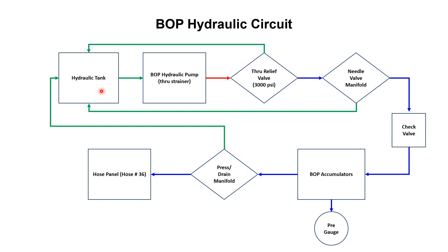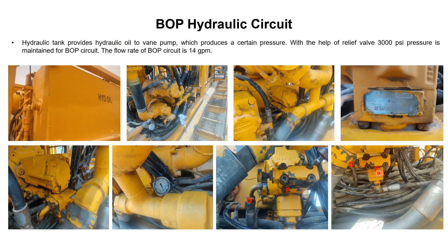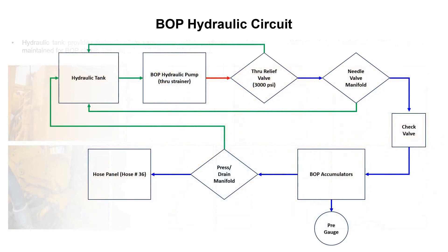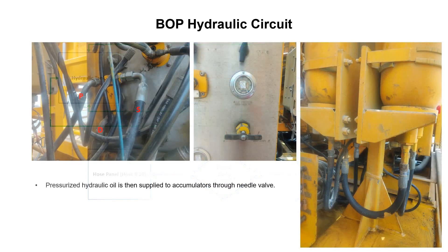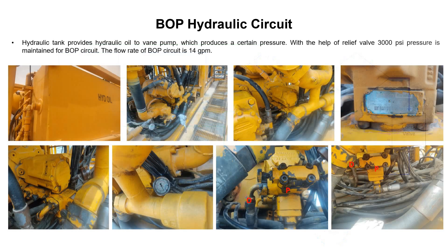The hydraulic tank provides oil to the pump. Then from the pump, with the help of this relief valve, 3000 psi is diverted to the circuit and the extra pressure is relieved back to the hydraulic tank. Up until now we have reached this particular point. From here, with the help of the needle valve manifold, we can control again. The hydraulic tank provides hydraulic oil to the vane pump, which produces a certain pressure. With the help of the relief valve, 3000 psi pressure is maintained for the BOP circuit.